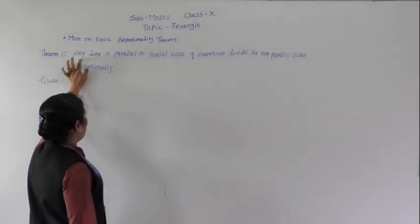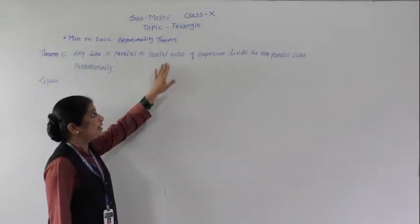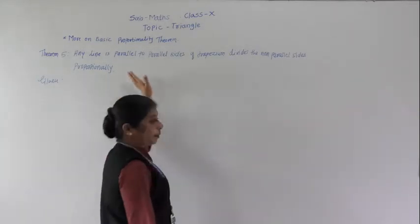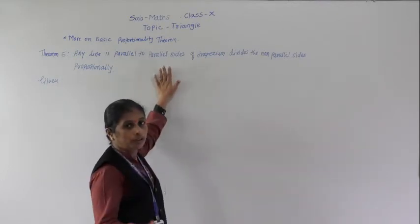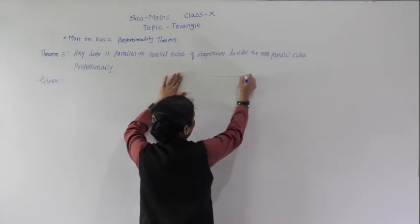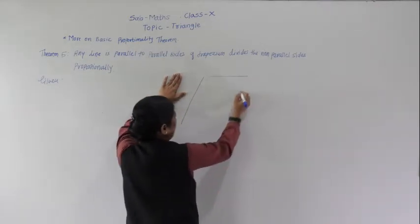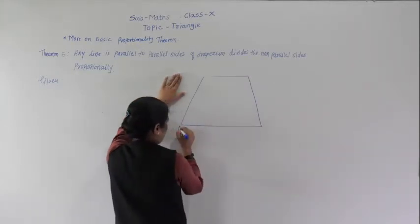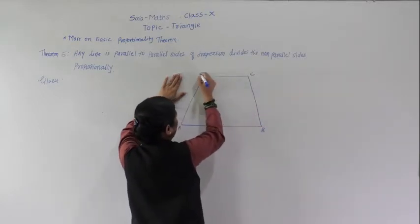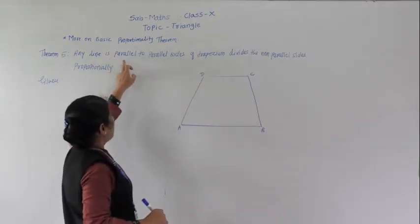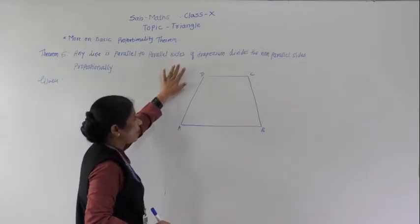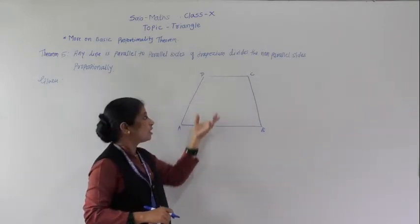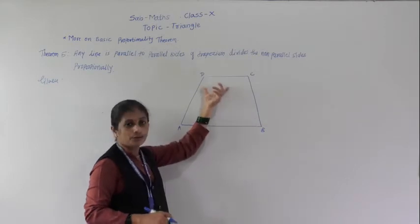Next theorem 5: any line parallel to the parallel sides of a trapezium divides the non-parallel sides proportionally. We draw trapezium ABCD where AB is parallel to DC. One more line EF is drawn parallel to the parallel sides of the trapezium.